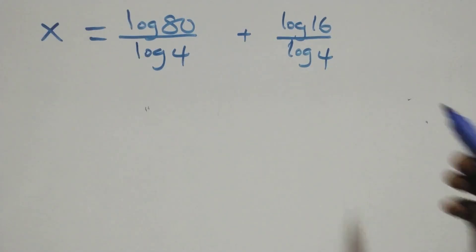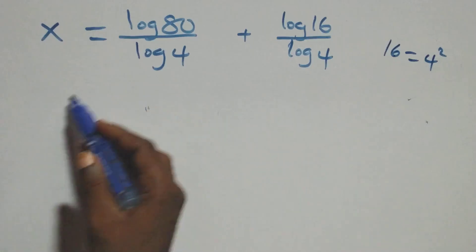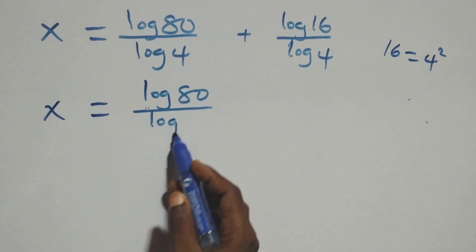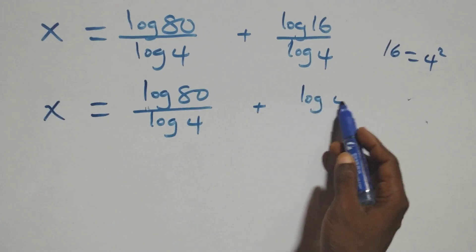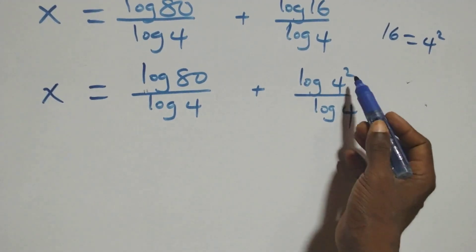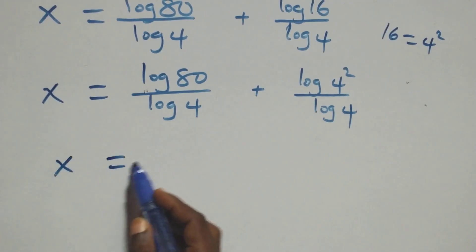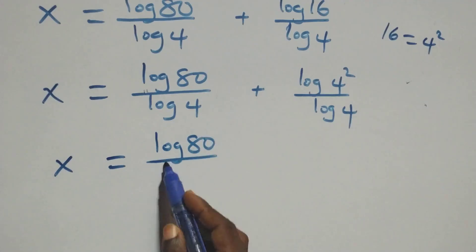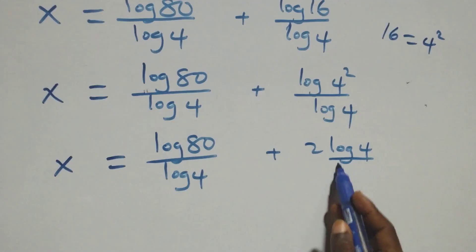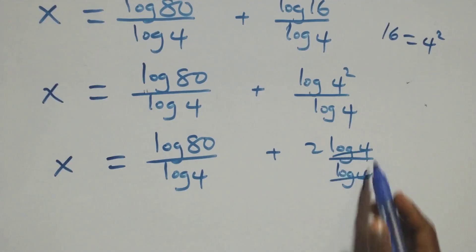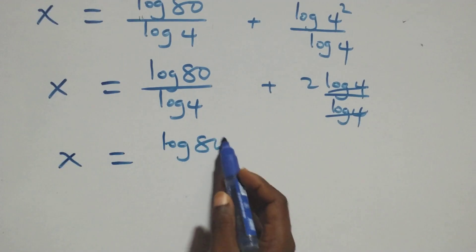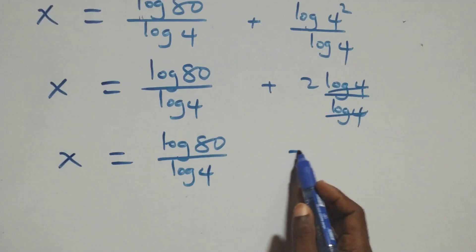We can express 16 as 4 times 4, that's 4 squared. So we have x equals log 80 over log 4 plus log(4 squared) over log 4. Log 4 cancels, giving x equals log 80 over log 4 plus 2.